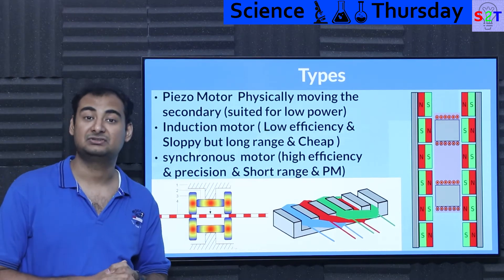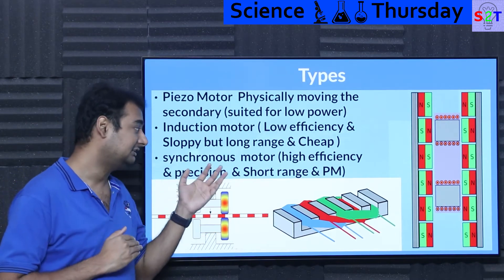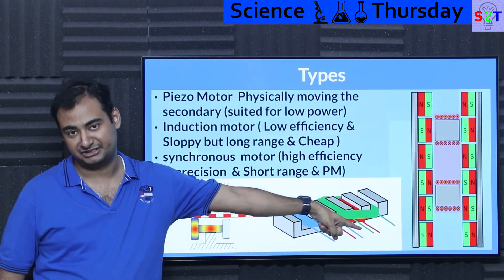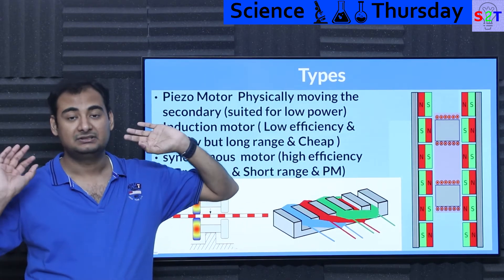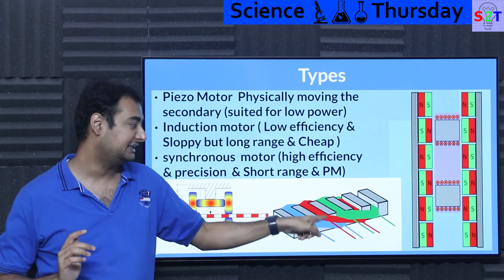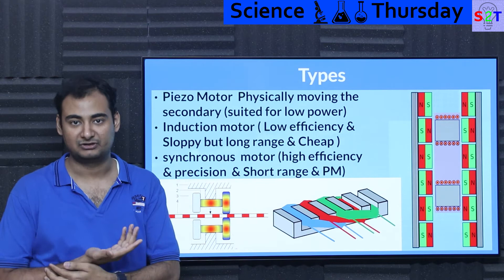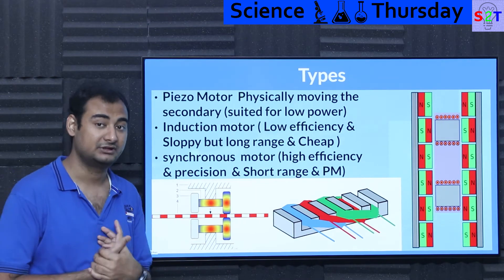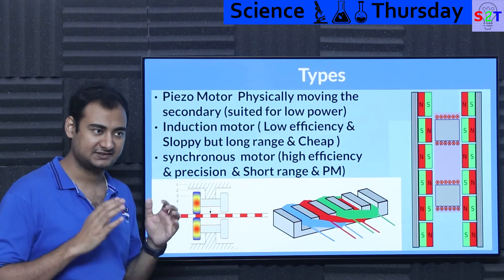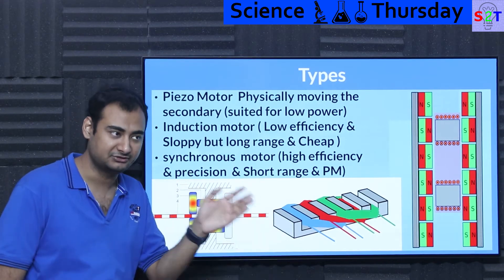Then you have the linear synchronous motor. These are the backbone of the precision industry — for example, CNC machines that directly utilize linear motion will use these, because they have electromagnets and permanent magnets. This gives much higher performance. Going from asynchronous to synchronous is inherently a bit more efficient — you're talking about three to five percent more efficiency.